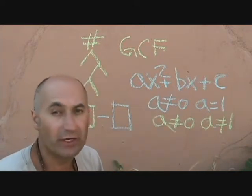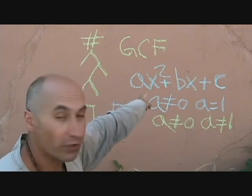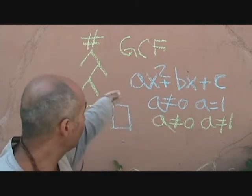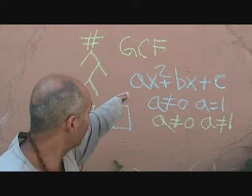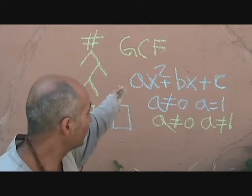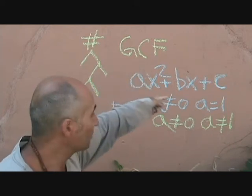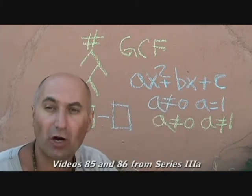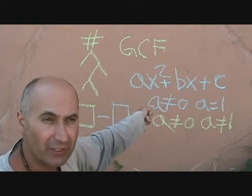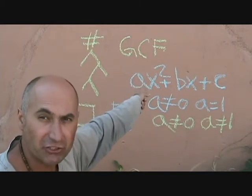One thing you've got to be careful with: if there's a number in front of the x², you should look for the GCF first. You always look for GCF first, because if you can take out a greatest common factor and get x² by itself just using the GCF method, then that just becomes a simple trinomial, which we've already covered. So we're going to focus on factoring trinomials where we can't remove the 'a' just by taking out the GCF.